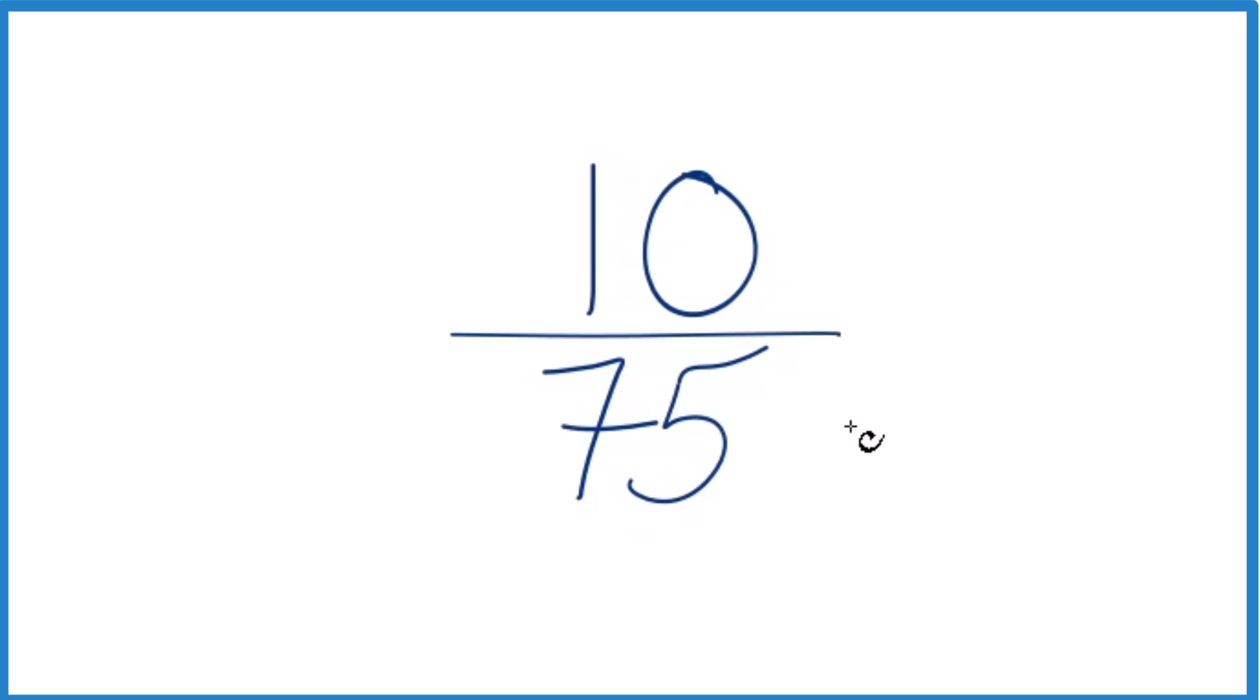So to do that, we need to find a common factor. And that's going to be a whole number that divides evenly into 10 and into 75. It looks like 5 would go into 10 and 75. So let's try that.